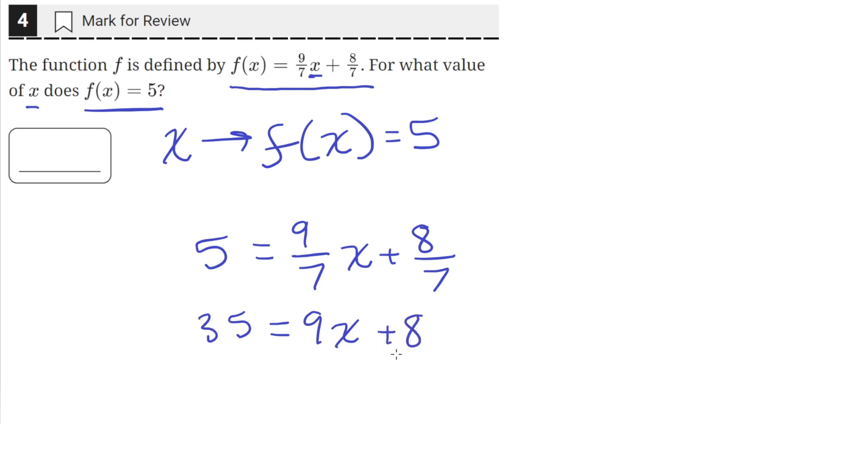Then we can subtract 8 from both sides to move this 8 over here. On the left hand side we'll be left with 27, and on the right hand side we'll just have 9x.